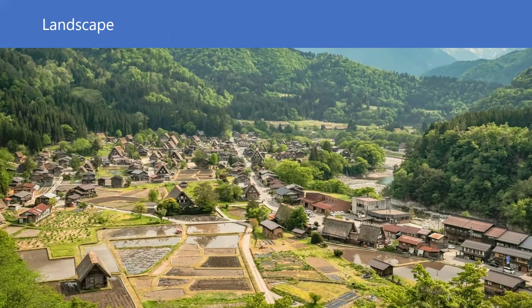In this presentation, I would rather figure out what characteristics the landscape has. This is a very famous landscape — Shirakago in Gifu Prefecture, Japan. What can you see in this landscape?